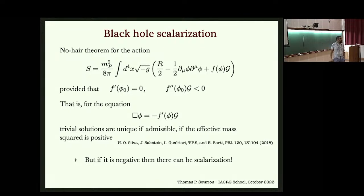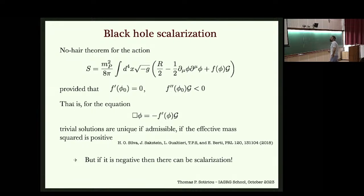If the effective mass squared is negative, you get a tachyonic instability — the scalar perturbation will want to grow, exactly as in the DEF model. There are classes of theories where you can create this tachyonic instability for black holes. It is controlled: if f is φ², then f'' is just a coupling constant controlled by the Gauss-Bonnet invariant G. For more complicated functions, the value of φ matters as well — you have an effective mass squared controlled by curvature.